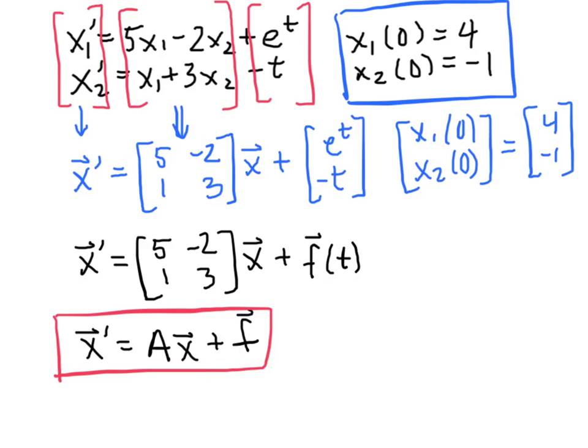Okay, and we can rewrite that then as the vector x evaluated at time 0 equals [4; -1], which I'll just denote by C, meaning constant vector. So this guy will be the vector C. So here we've got our entire initial value problem now written in matrix form.